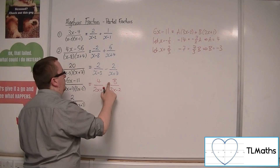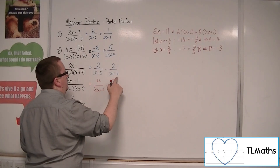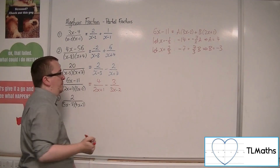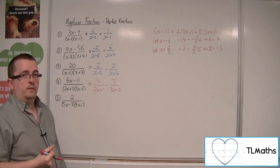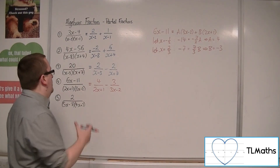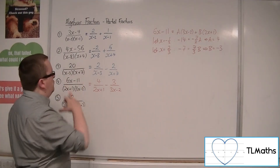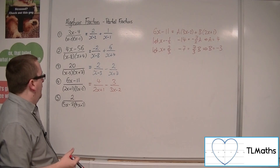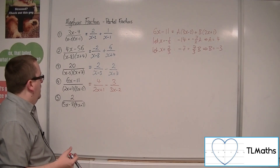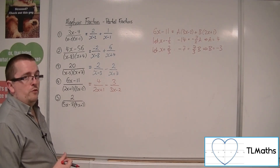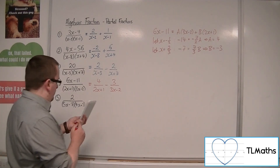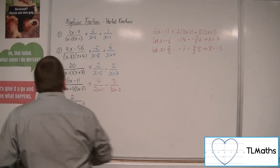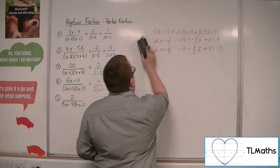So A is 4 and B is minus 3. We've now written (6x - 11) over (2x + 1)(3x - 2) as partial fractions: 4/(2x + 1) minus 3/(3x - 2).